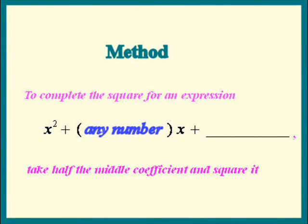Last time, we learned that to complete the square for an expression x squared plus any number times x, all we have to do is take half the middle coefficient and square it.